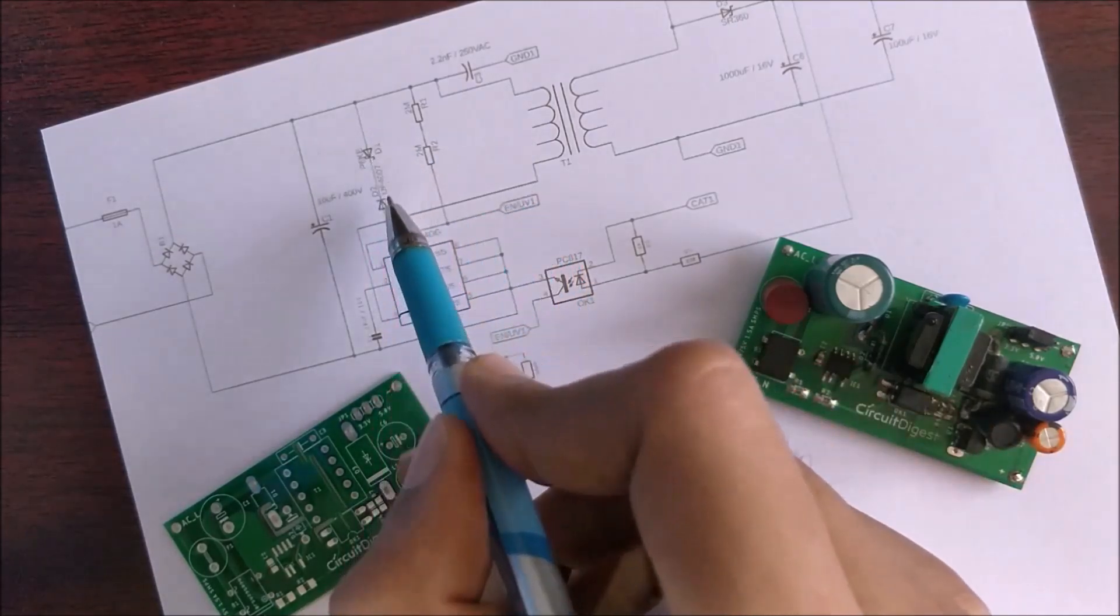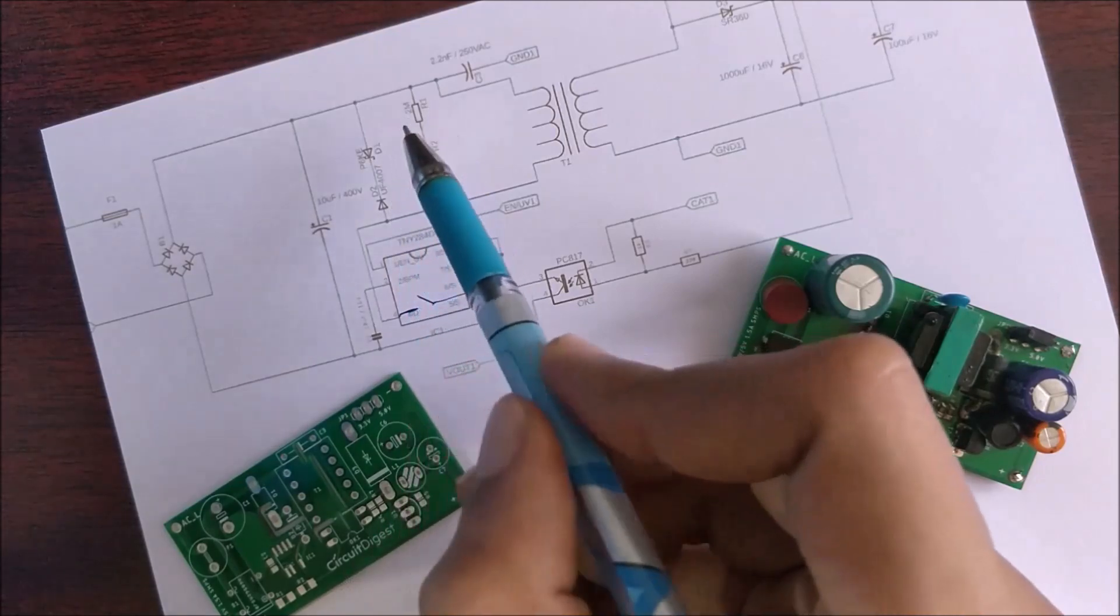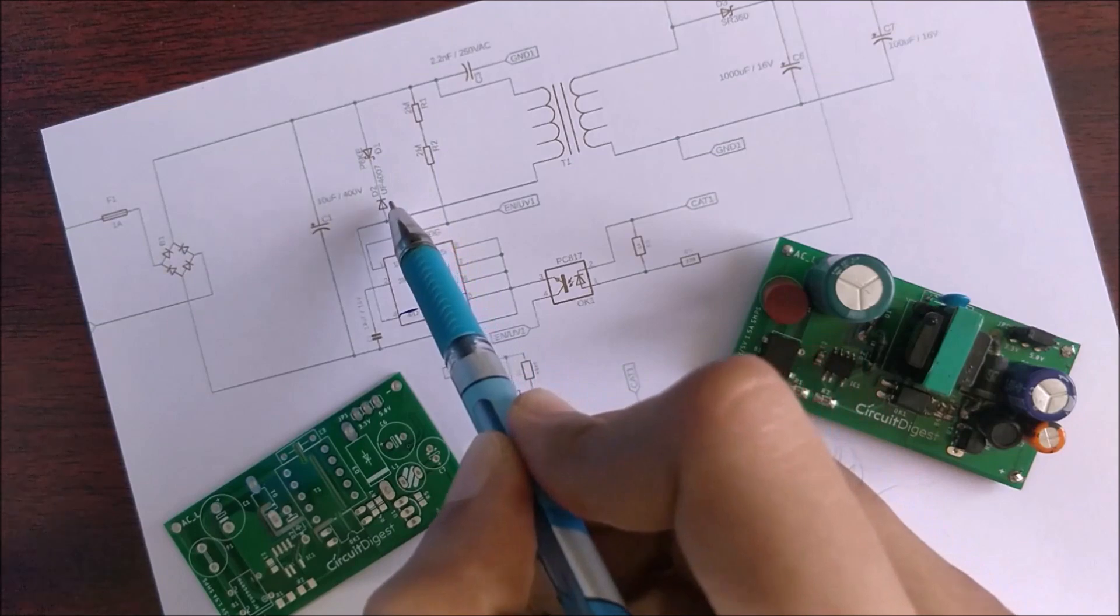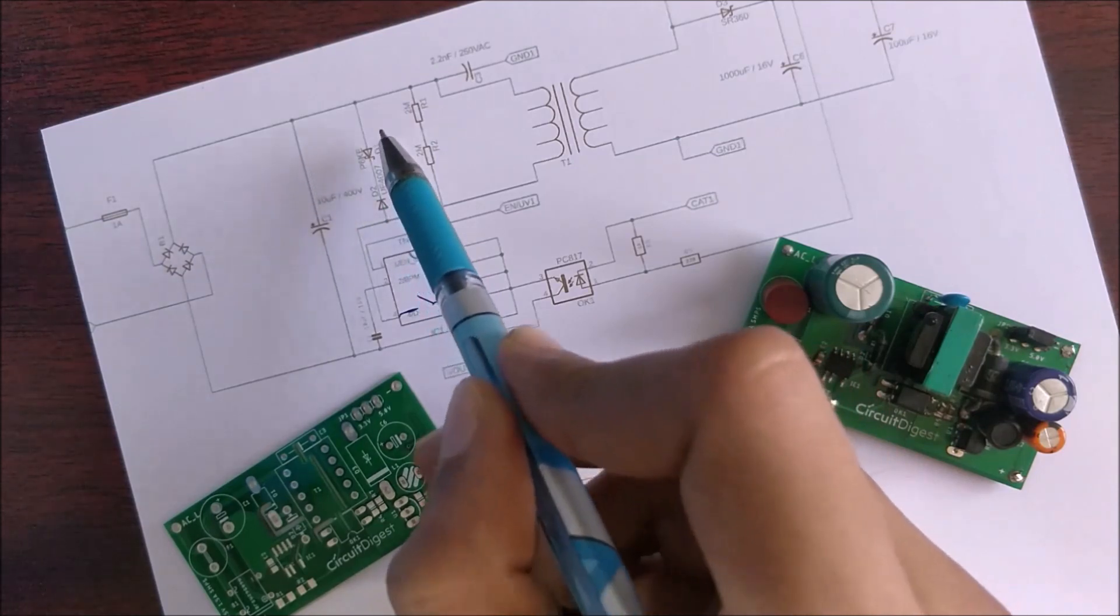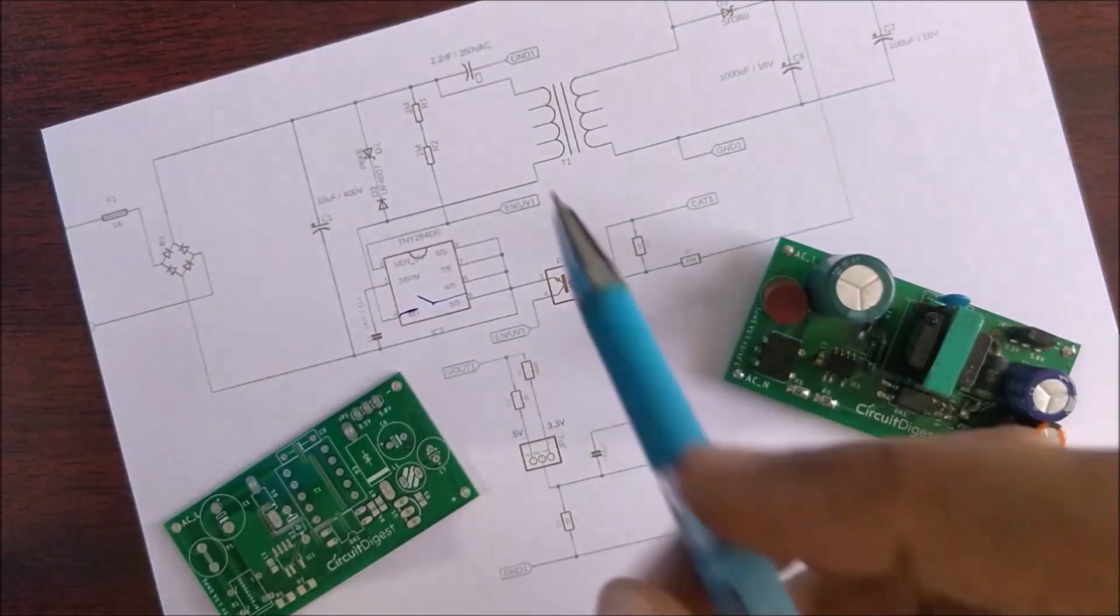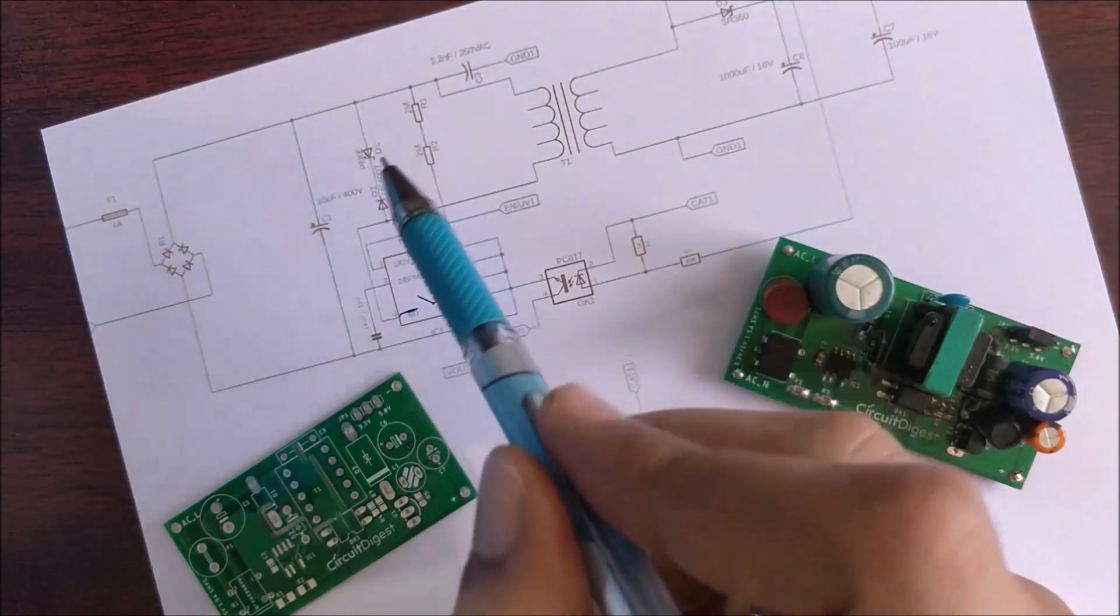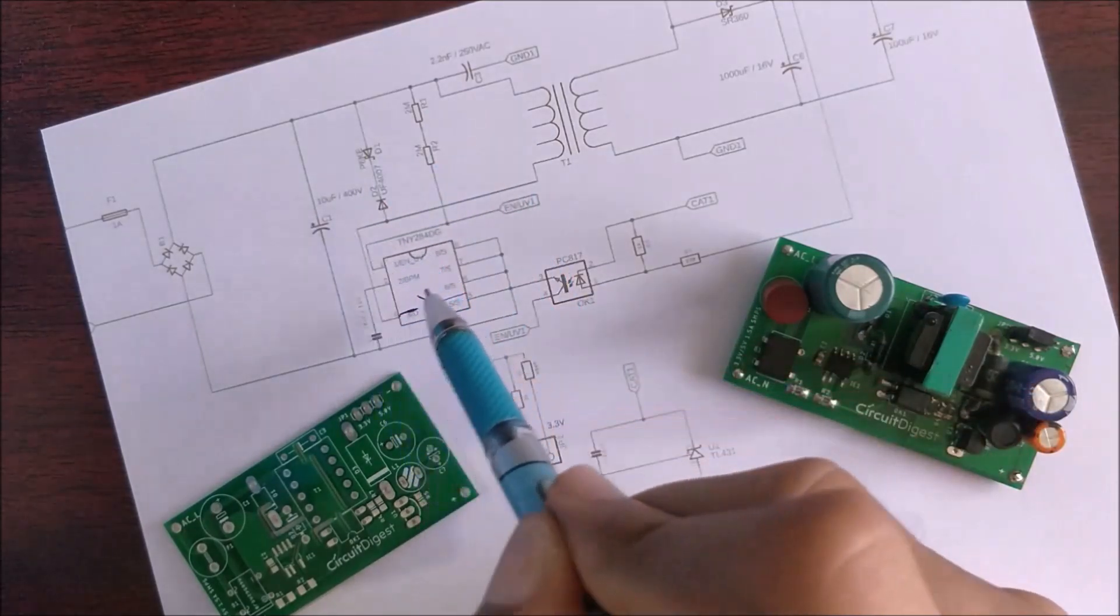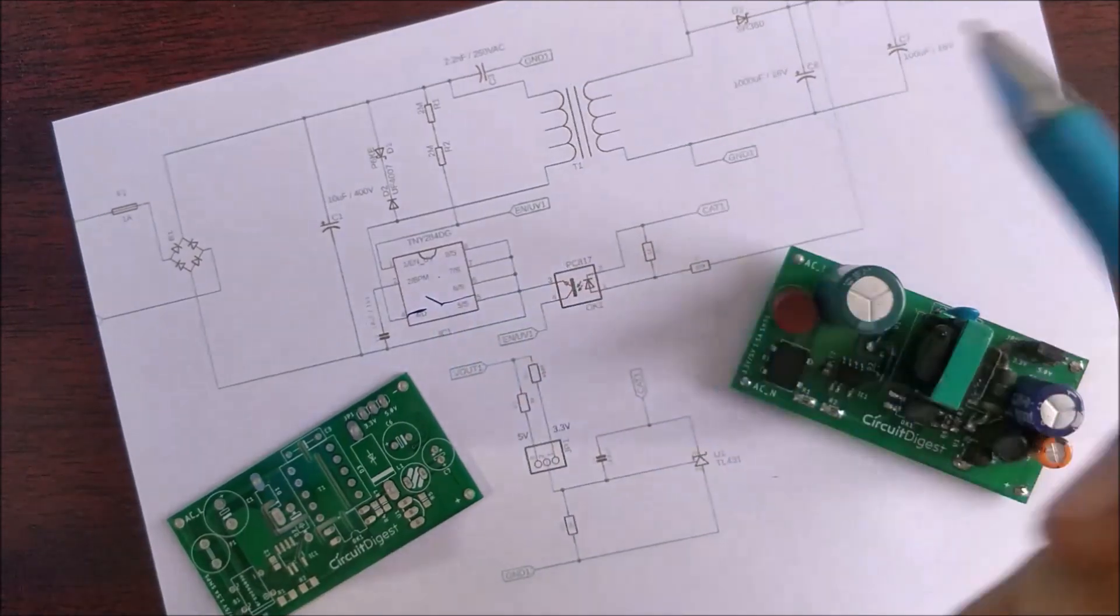Then over here we have two diodes which is a Zener diode with part number P6KE and another normal diode which is ultra-fast diode. Both of these diodes together will work like a clamping circuit. This clamping circuit will clamp all the excessive voltage which appears during the switching process and that could potentially damage our controller IC.